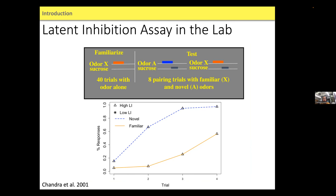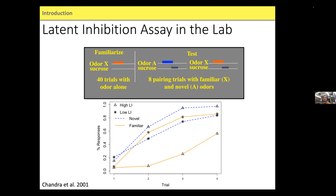This is what that looks like in learning curves over four trials. The familiar odor is the orange solid line, and the novel odor is the blue dotted line. Individuals that exhibit high latent inhibition have a suppressed response to the familiar odor, but their response to the novel odor happens very quickly — they learn the novel odor but not the familiar, because they've already decided that's unimportant information. Low LI bees have exactly the same learning curves for both familiar and novel odors — in their brains, there's no difference. That's how we distinguish our high LI and low LI bees.